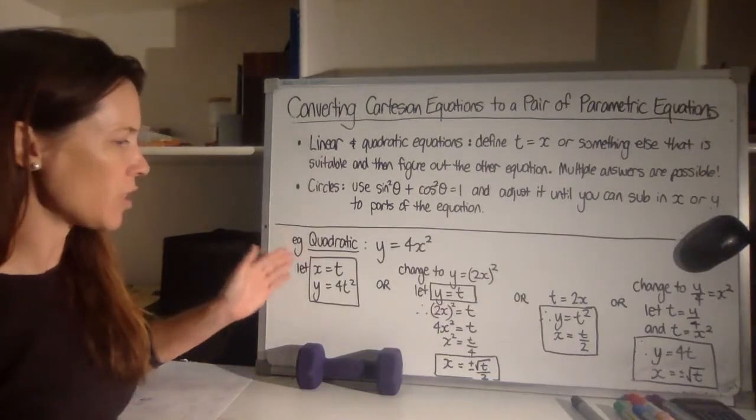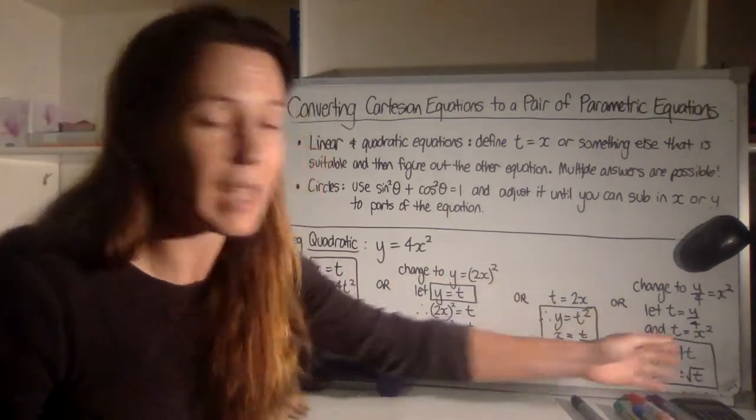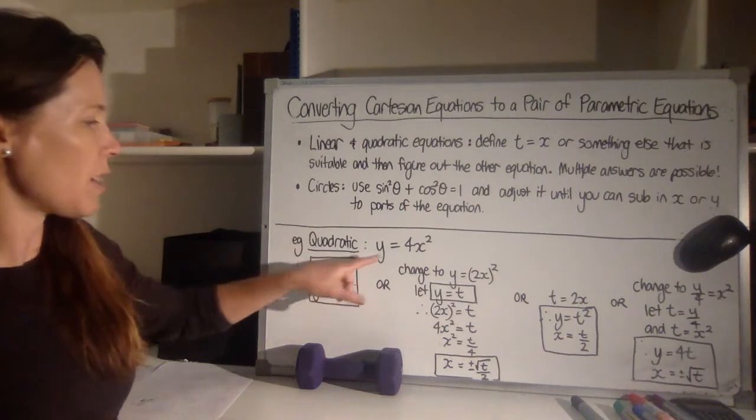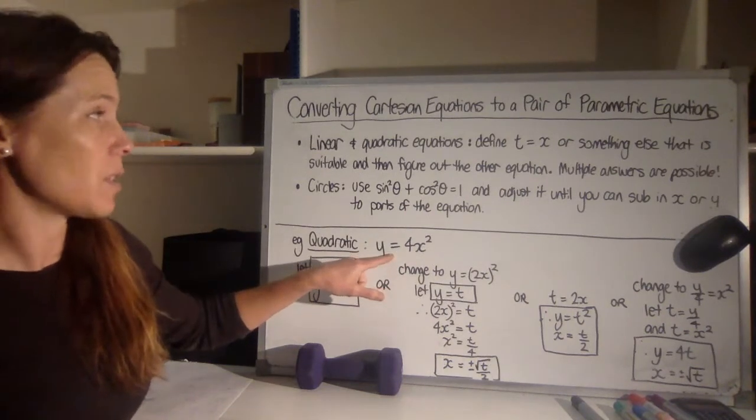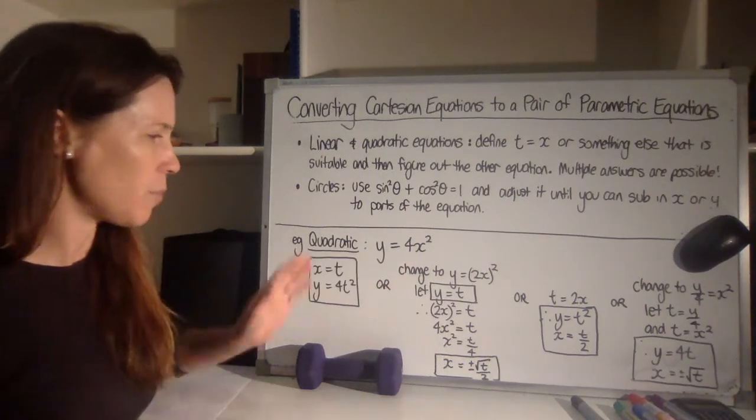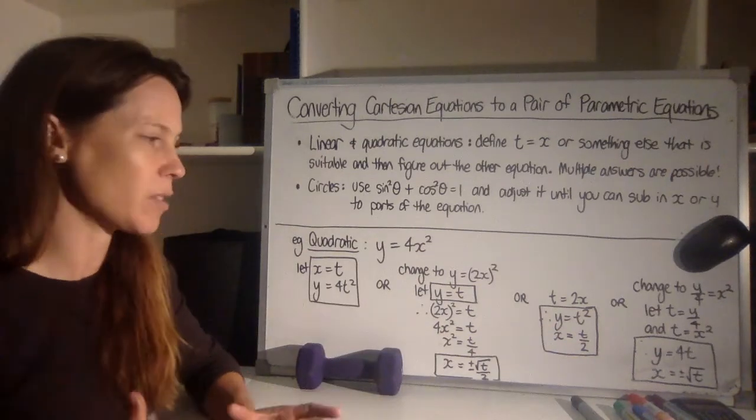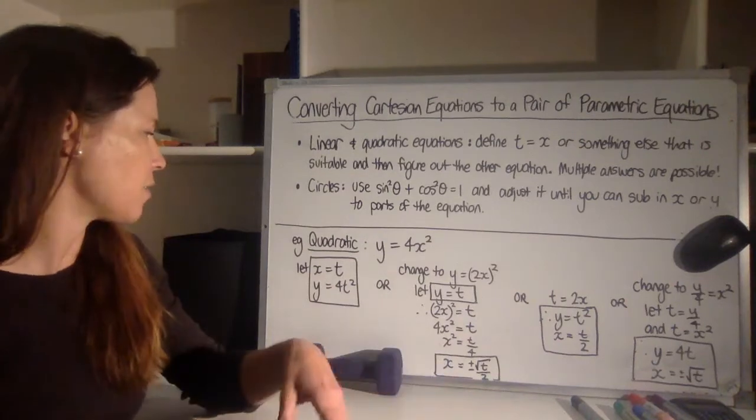And in this quadratic example, I've actually given you four different pairs of parametric equations, and there'd be plenty more, that can be derived straight from the same Cartesian equation. Now, I'm not trying to confuse you, but it is important to recognise that a lot of things will tell the exact same story but still look a little bit different.